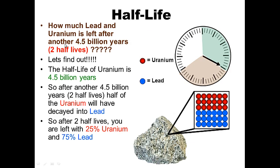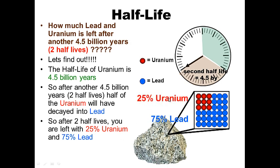After two half-lives — 9 billion years total — another 4.5 billion years has gone by, and half the remaining uranium decays into lead. So if I find a rock that has 25 percent uranium and 75 percent lead, or 25 atoms of uranium and 75 atoms of lead, I know the rock is 9 billion years old. You're starting to see a pattern here.